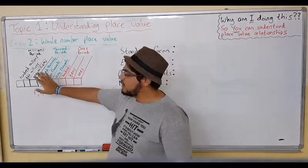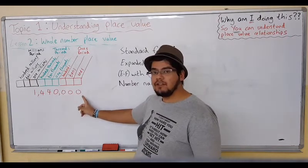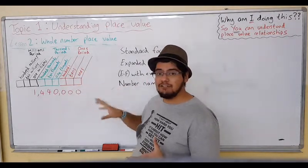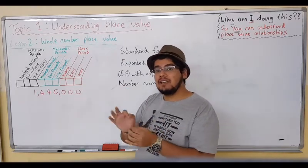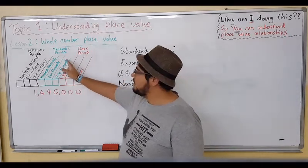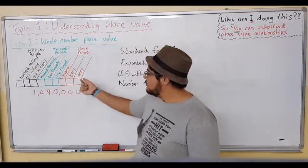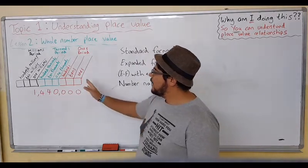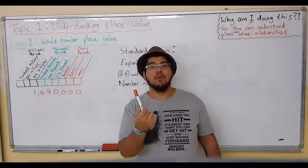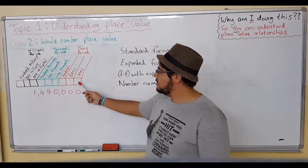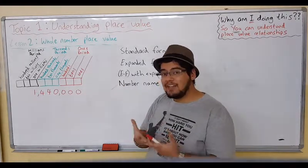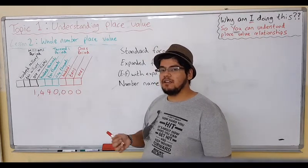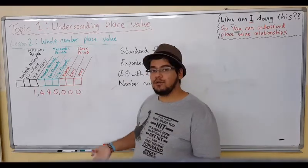We'll start on this side. The first place you have is your ones, then your tens, then your hundreds. This group together is called a period — a period is a set of three. So a set of three digits together separated by a comma is called a period. For example, if I have one pen, the one goes in the ones place. If I have ten pens, the one goes in the tens place and the zero goes in the ones place.